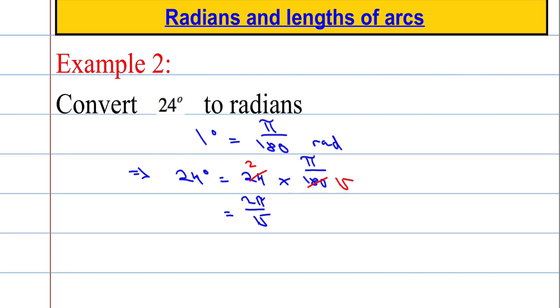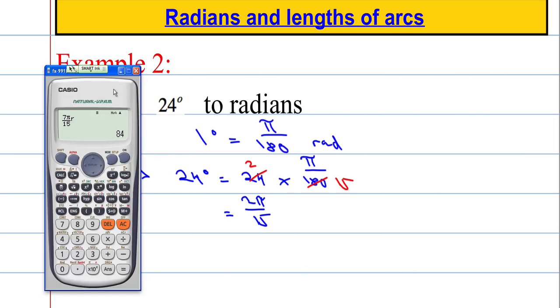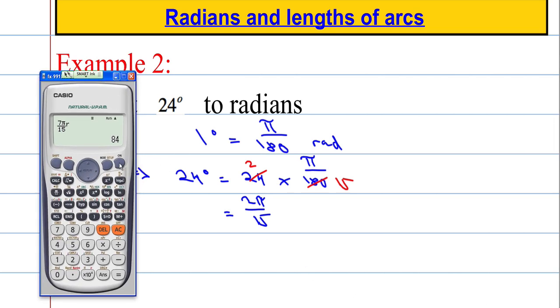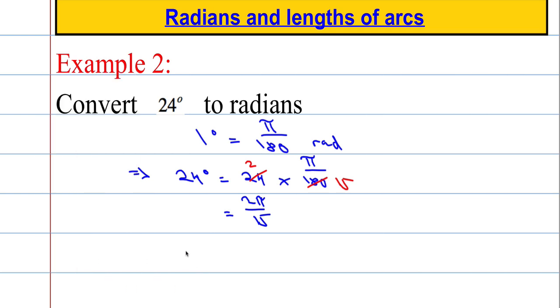Let's use our calculator to confirm. So I need 24, tell it that it's in degrees. I want to change this to radians, so I hit shift, set up, radians. I want to convert it to radians, and we get 2π over 15. Lovely.